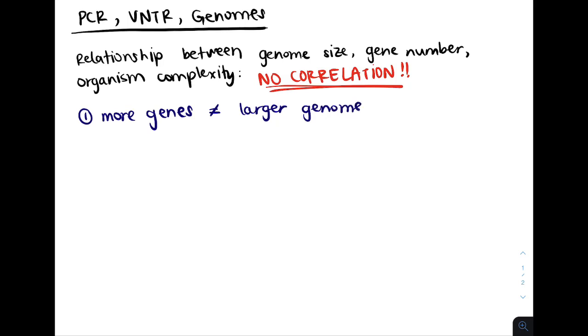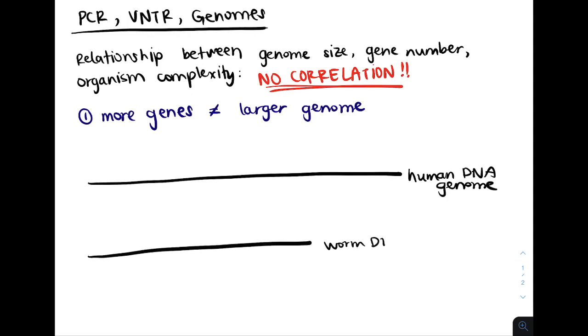So for example, if this is our human DNA genome, and if this is our entire genome of a worm, then both of them might have the same number of genes. But because genomes are more than just genes, the human DNA might have some introns and transposons that are not protein coding.